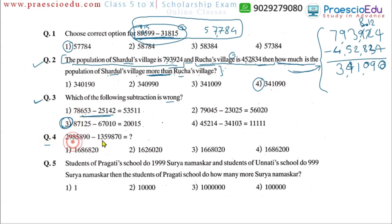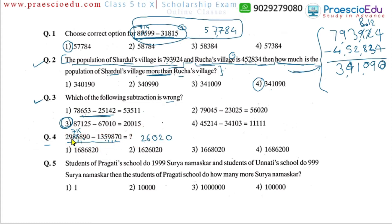Question number 4: this is also a subtraction in horizontal arrangement. So 0 minus 0 is 0. Then 9 minus 7 is 2. Then 8 minus 8 is 0. Then 5 minus 9 is not possible, so we get 15, making it 15 minus 9 which is 6. Then 7 minus 5 is 2. Then 9 minus 3 is 6. And 2 minus 1 is 1. So the answer is 16,26,020, which is option number 2.